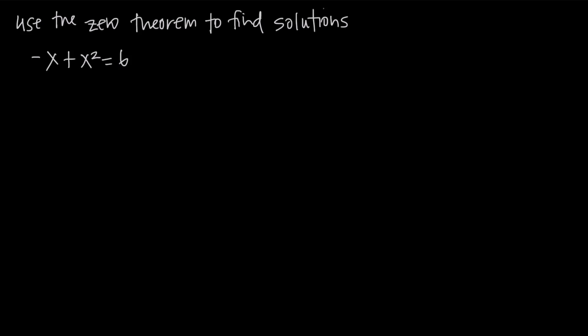In this video, we're talking about how to use the zero theorem to find the solutions to a quadratic equation. In this particular example, we have the equation negative x plus x squared is equal to 6.